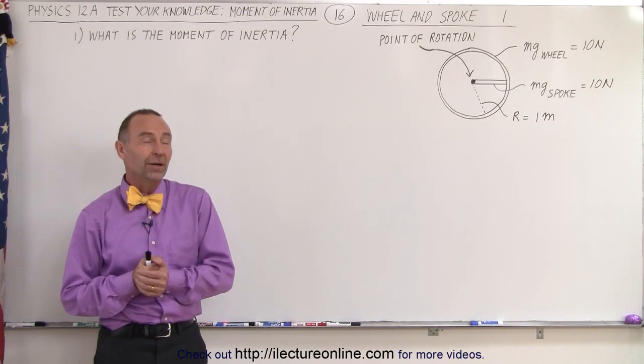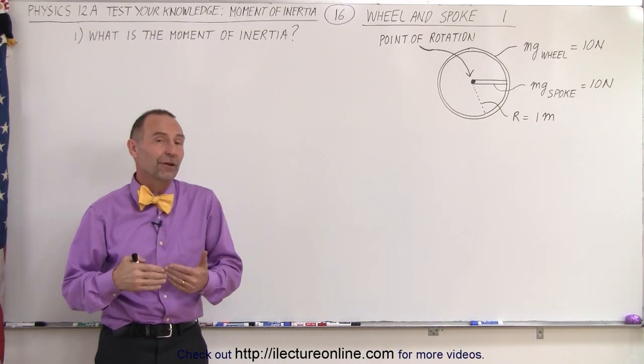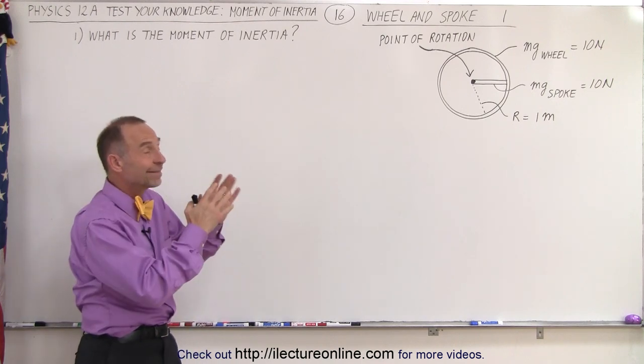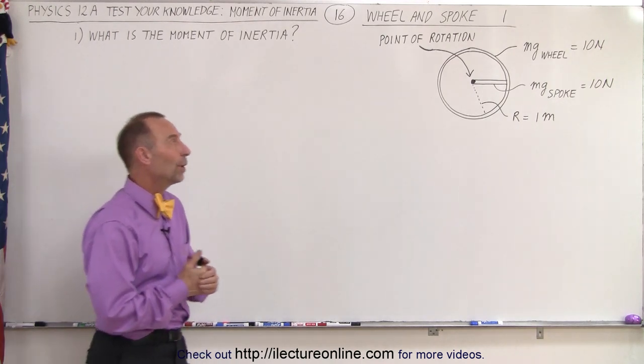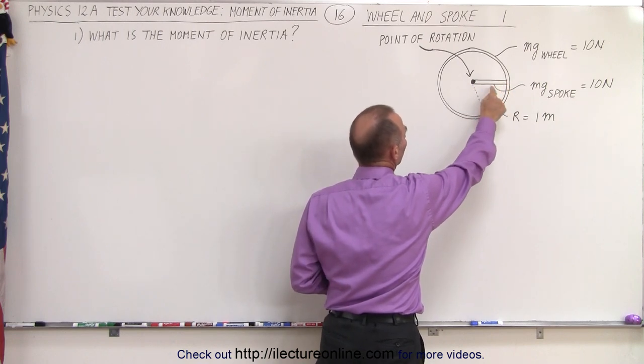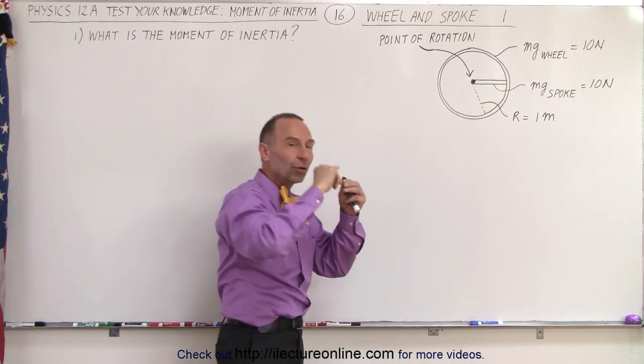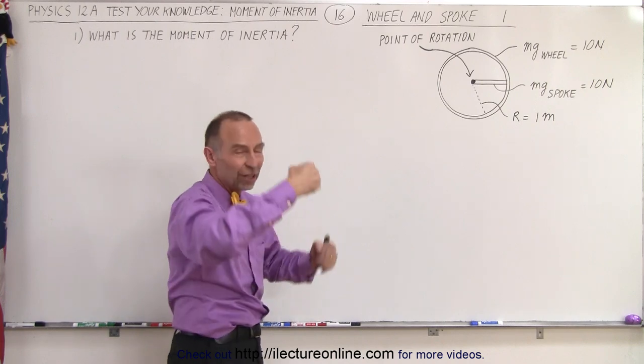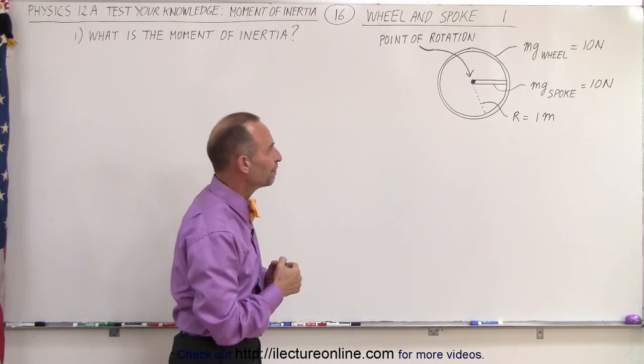Welcome to Electron Line. Our next problem is going to be the first of several problems dealing with the exact same situation. We have a ring which contains one spoke, and the spoke at one end is attached to the point of rotation. Some steering wheels of cars are built like that.